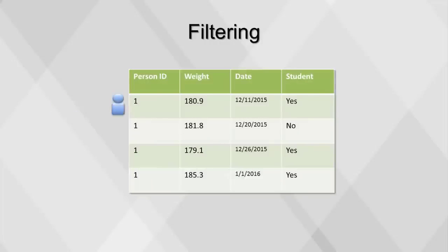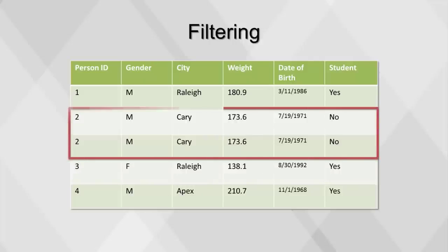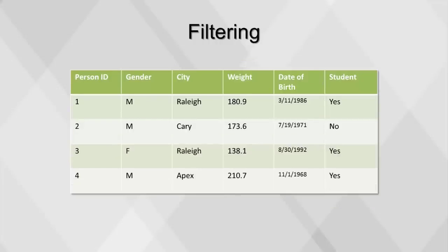If there are multiple rows for the same ID, we know that the rows reflect data from the same person. Finding and understanding the level of detail for a table is necessary before analyzing the data. After determining the table's level of detail, you should check for duplicate observations — rows of data in which all values are exactly the same as another row. In some cases, duplicate observations may be legitimate, but usually these are erroneous and need to be removed.